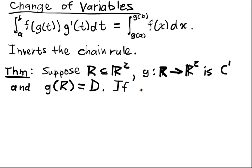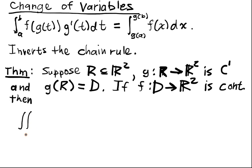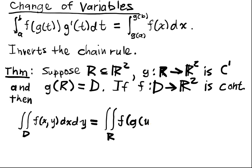Well, if f from the set D into R squared is just continuous, then the integral over the region D, f of x, y, dx dy is equal to the integral over the region R, f composed with g of u, v, times the determinant d of g1, g2,